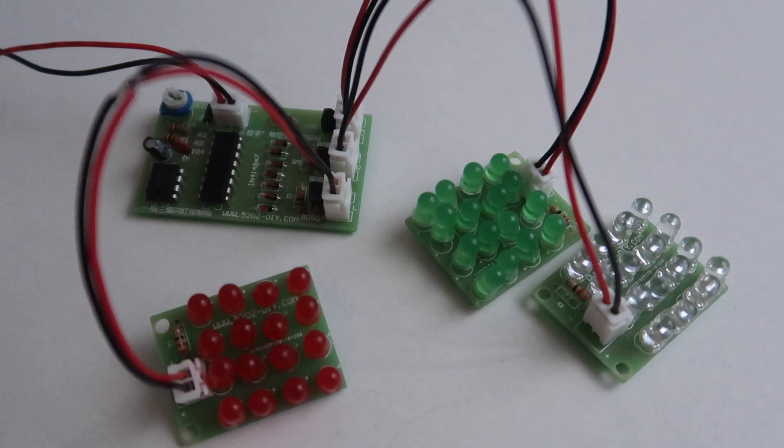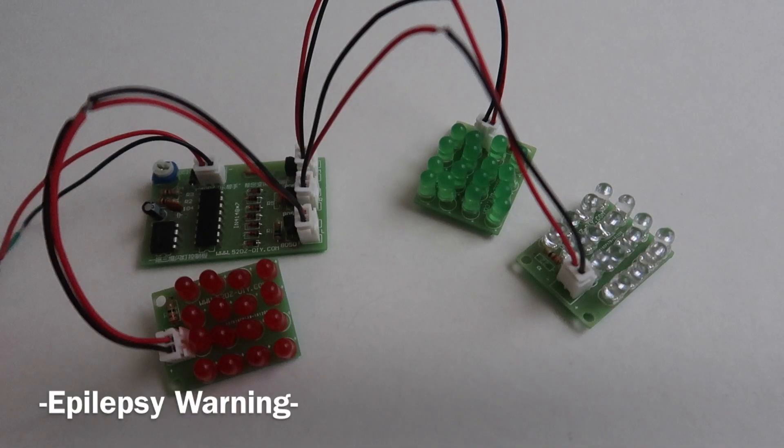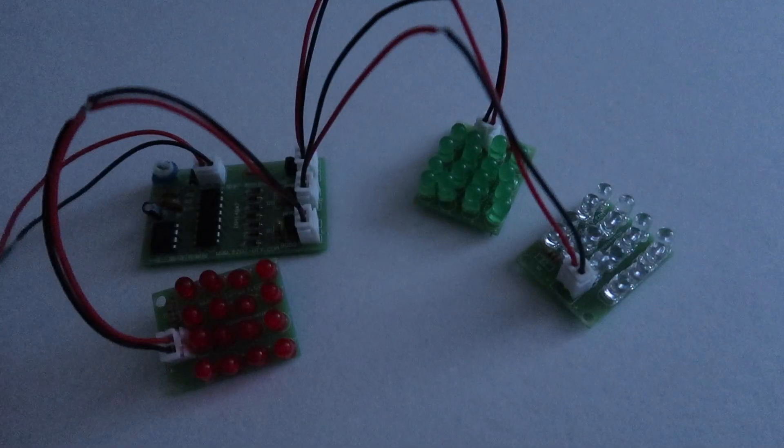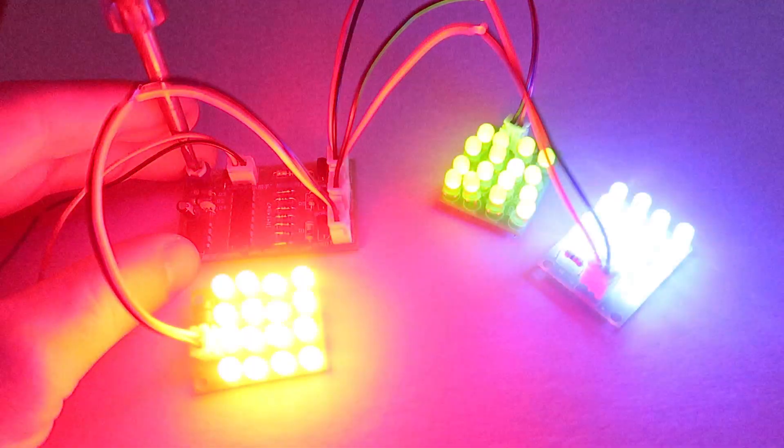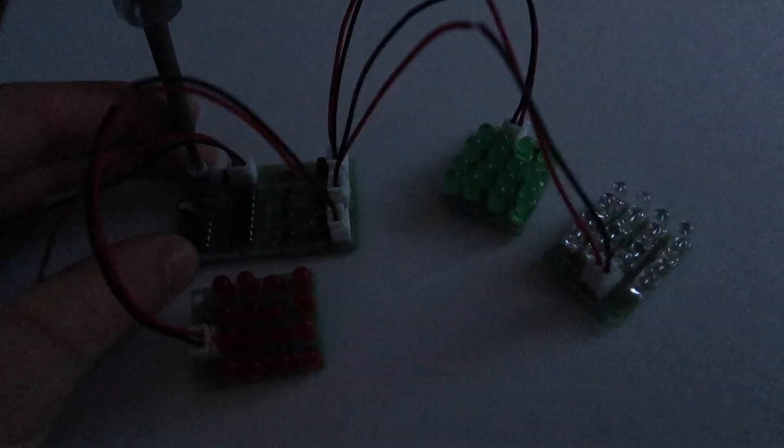Here is the finished product. Let's see it in action. I'm going to turn the lights off and plug it in. By turning the adjustable resistor, you can change the speed.